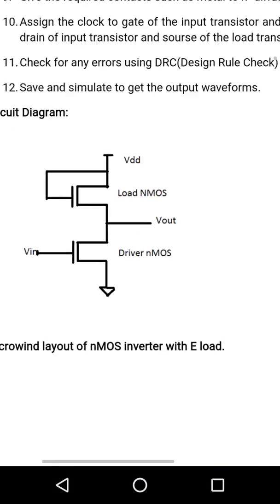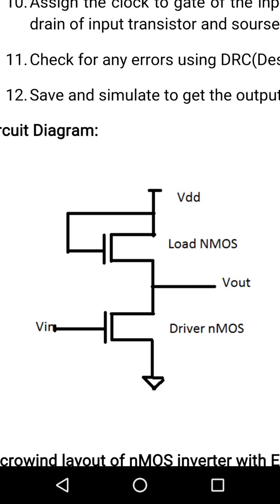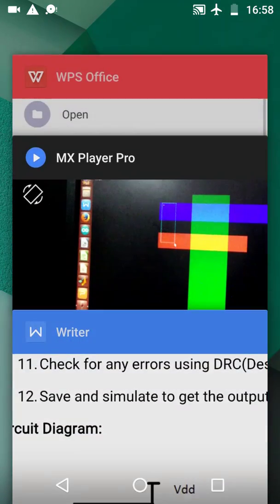After that, we will select the metal layer for the connection between the polysilicon and the metal. We are drawing the layout of this portion. After that, again we will select the metal layer for the connection of the NMOS which is coming below the other NMOS.